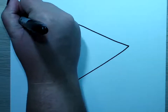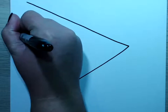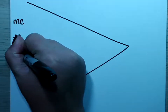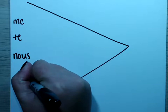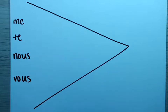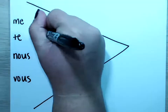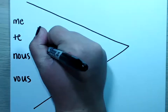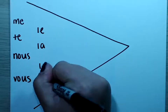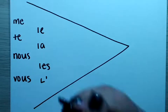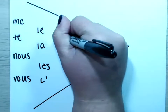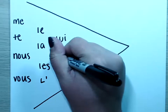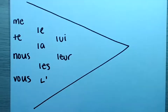Let's start with the ones we had learned previously: me, te, nous, and vous. We had also learned le, la, les, and l'apostrophe. We had learned lui and leur to say him, her, or them.